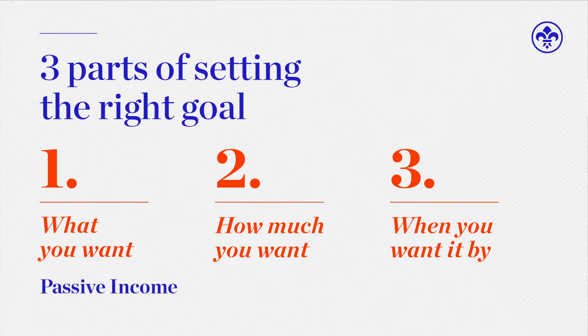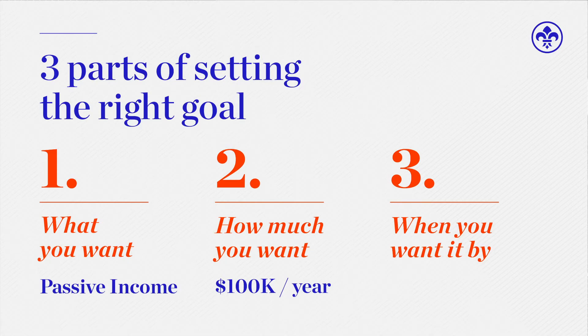Let's look at an example. Say you want passive income — that's what you want. How much of it do you want? If you're on $100k now, you might want to replace that income, so you want $100,000. That's how much you want to achieve. And when do you want it by? Let's say you want to achieve that by the time you turn 60, and that's in 20 years. So 20 years is the time frame we're working towards.